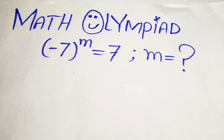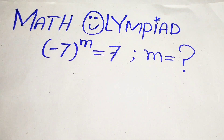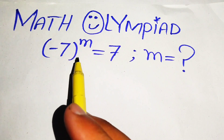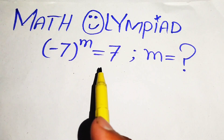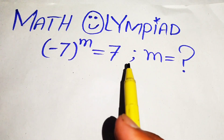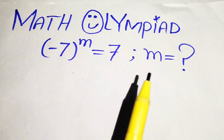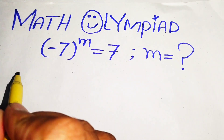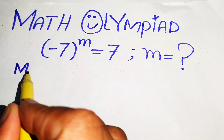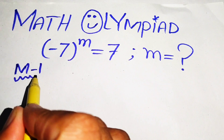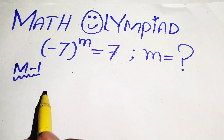Hello everyone, welcome. We solve this nice math algebra problem where we have minus 7 to the power of m equals to 7, and we solve this problem for the values of m. We will solve this using two methods, so first we discuss method one.